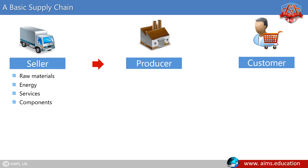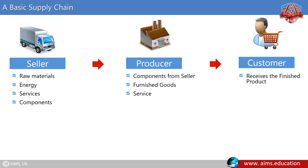A producer is the one who receives components from the seller to produce a finished good or service, such as shirts from fabric, crockery from plastic, power from electric wiring, or provides transportation through aircraft. The customer is the one who receives the finished product — the one who wears those shirts, uses the crockery, turns on the lights, or flies in an airplane.